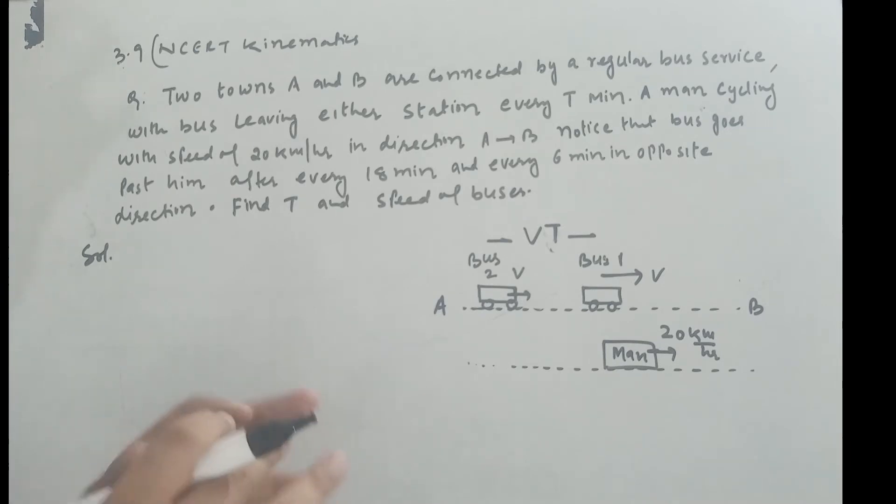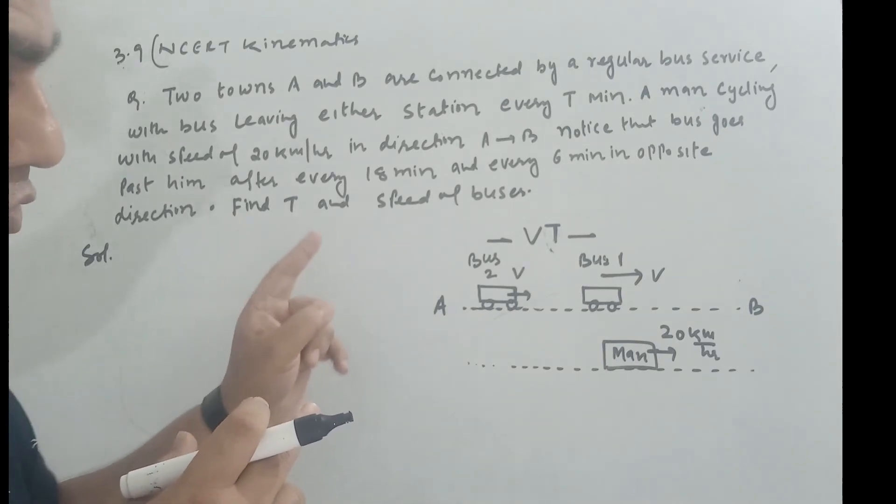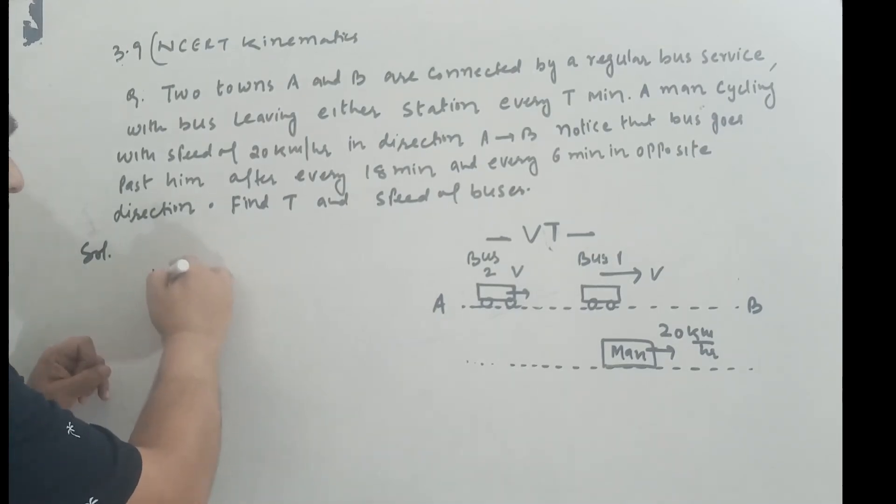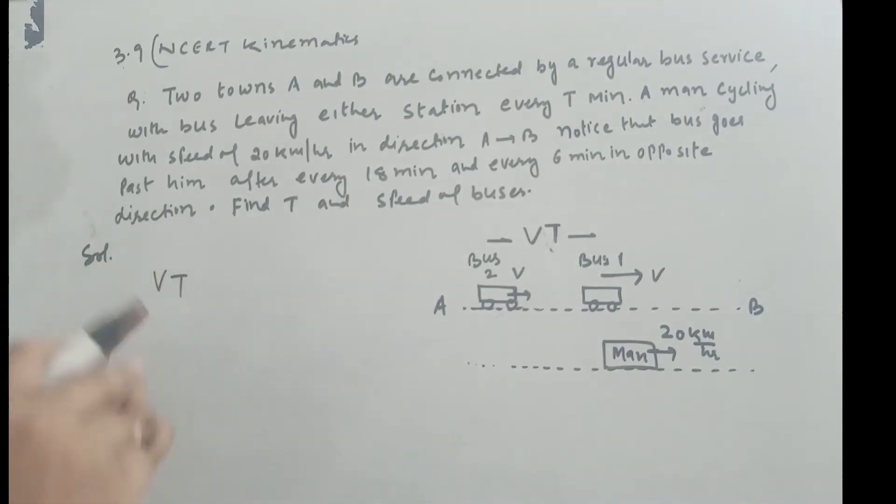Now when the man is also moving, relative velocity - stop the man here. Now bus 1 is crossing the man. Bus 2 will meet this man after 18 minutes. The distance between bus 2 and bus 1 is VT.